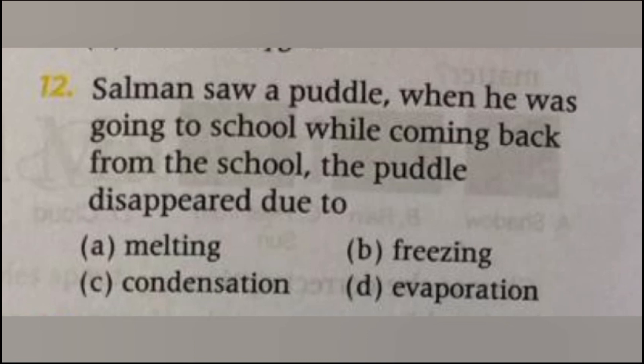Salman saw a puddle when he was going to school. While coming back from school, the puddle disappeared due to melting, freezing, condensation, or evaporation? The answer is D, evaporation. Evaporation is the process of conversion of liquid into gas. The puddle that Salman saw disappeared by the process of evaporation, which takes place due to the heat of sunlight.